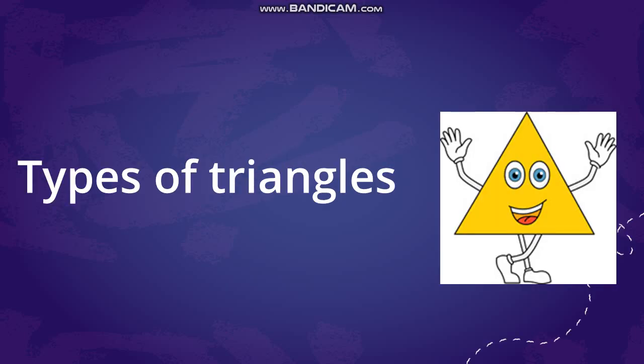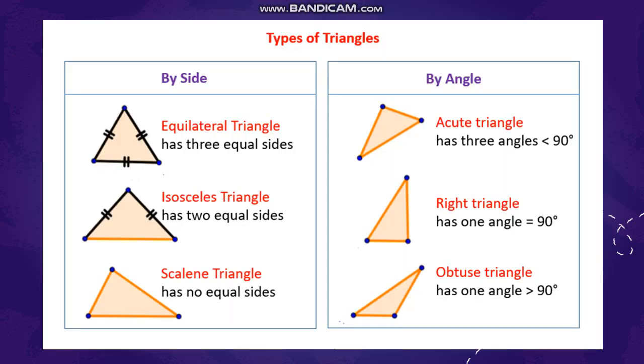You all know there are different types of triangles. The types of triangles are based on two categories. One is types of triangles based on sides, and another is types of triangles based on angles. Let's see the first category by sides.